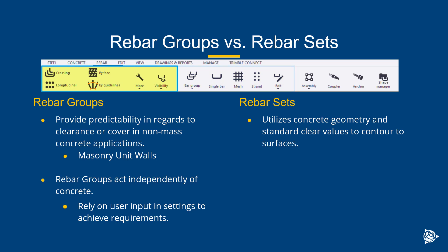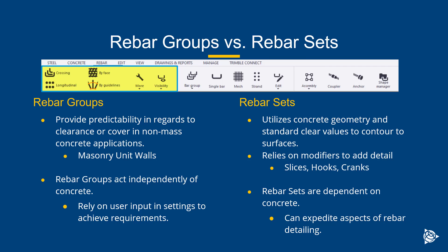Now with rebar sets, it's a little different. They utilize the concrete geometry and can do it for both parts and pours. So you can actually reinforce pours in pour mode, which you cannot do with rebar groups. Rebar sets adhere to standard clear values either in the options, additional clear cover provided on the concrete itself, or even through surfaces.